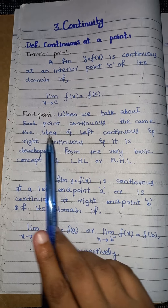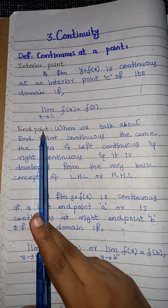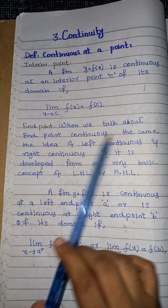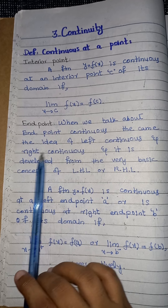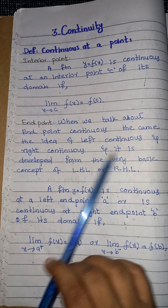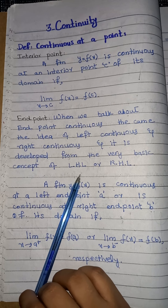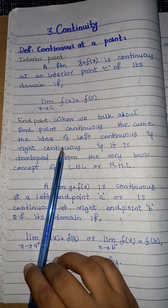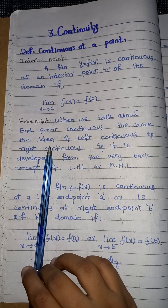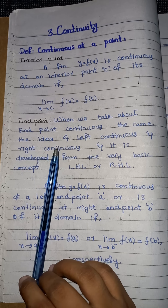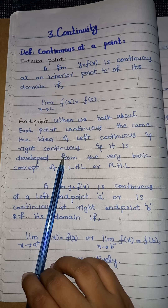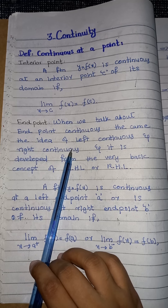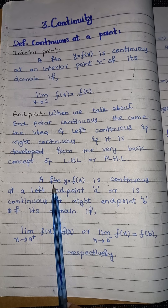Now, what does it mean to be continuous at an end point? When we talk about continuity at an end point, the ideas of left-continuous and right-continuous arise, developed from the basic concept of left-hand and right-hand limits — the same one-sided limits we discussed earlier in the definitions of limits.